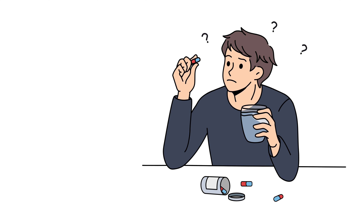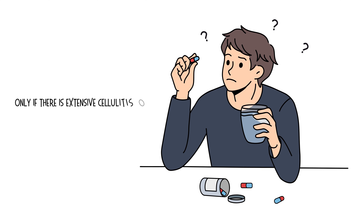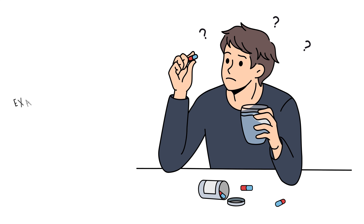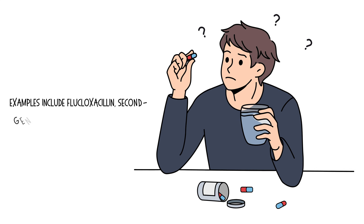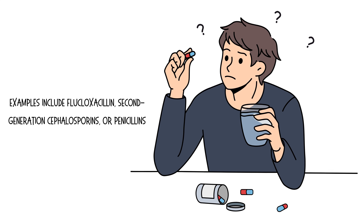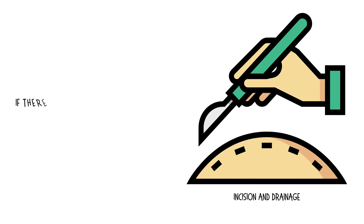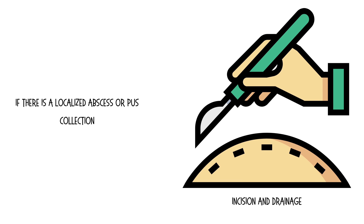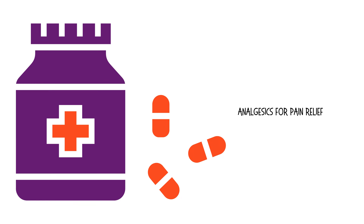Oral antibiotics are used only if there is extensive cellulitis or systemic symptoms. Examples include flucloxacillin, second-generation cephalosporins, or penicillins. Incision and drainage is indicated if there is a localized abscess or pus collection, along with analgesics for pain relief and topical steroids to reduce inflammation.